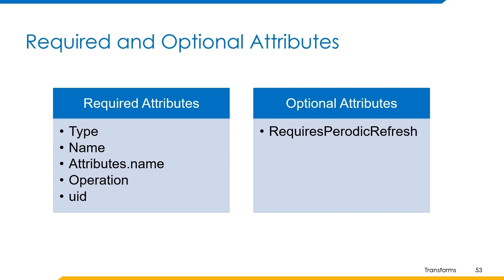The required attributes are type, name, attribute name, operation, and UID. Requires periodic refresh is an optional attribute. Now let's have a quick demo on how this transform works, and then we'll move to the next transform which is identity attribute transform.